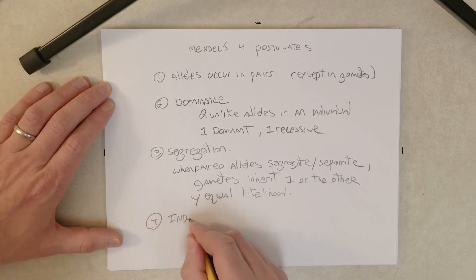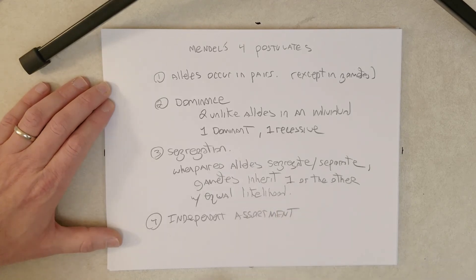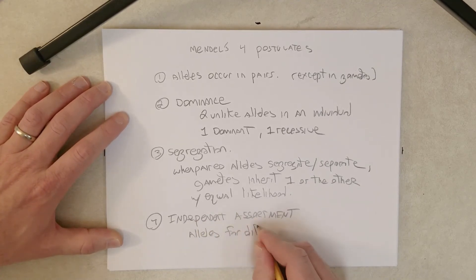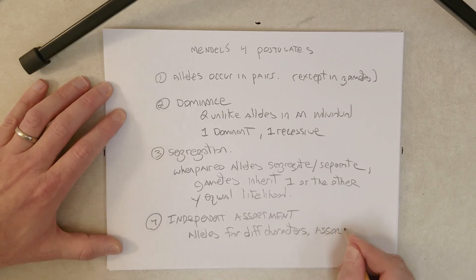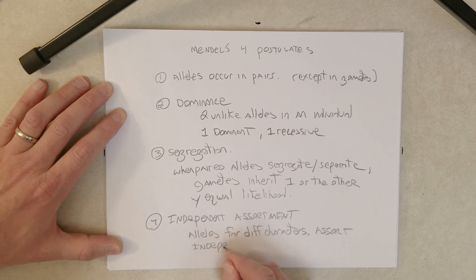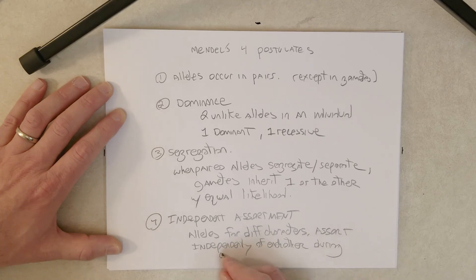And what this postulate says is that alleles for different characters, this would be like alleles for seed color versus alleles for seed shape. Alleles for different characters are sort independently of each other during gamete formation.